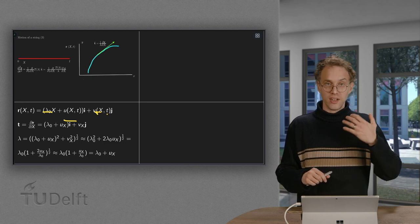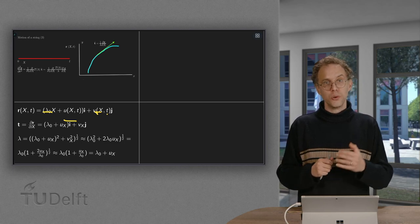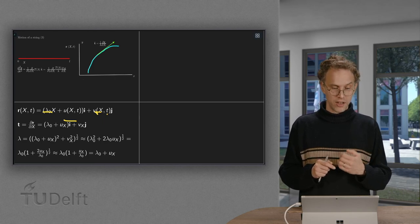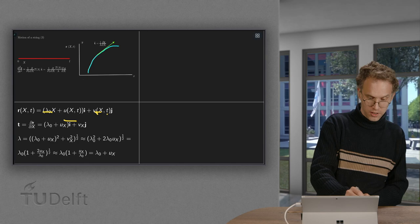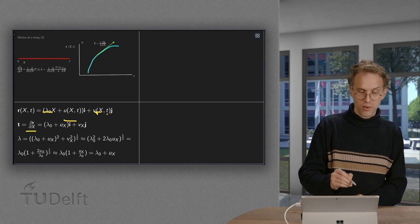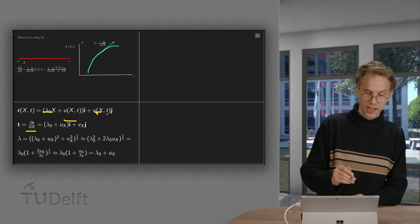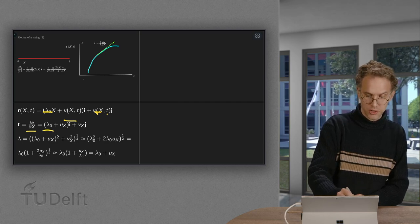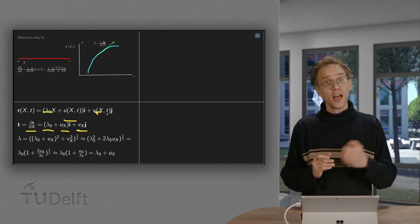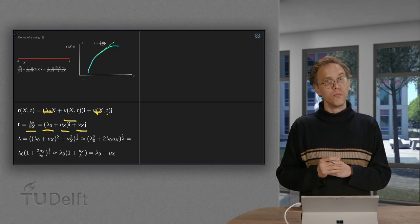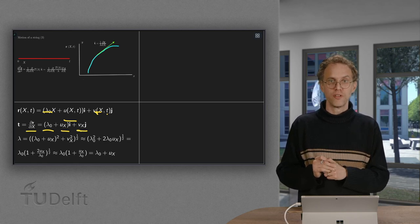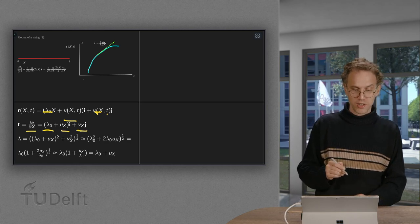Now we can use this to rewrite our PDE. First of all, we compute t, the general tangent equals dr dx. So we differentiate with respect to capital X. So we get a lambda 0 plus ux in the i direction plus vx in the j direction. And we can use this to compute our lambda and to linearize this, because our lambda is a source of a lot of trouble.